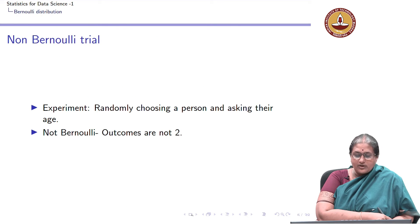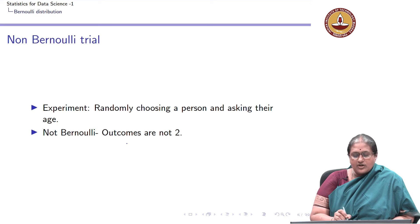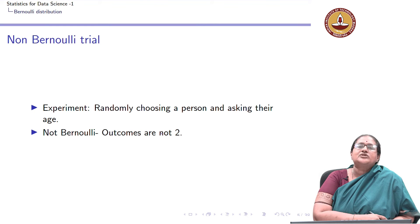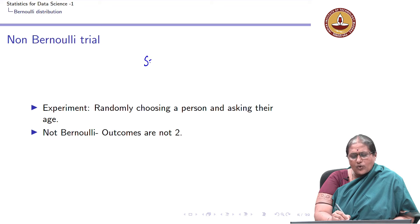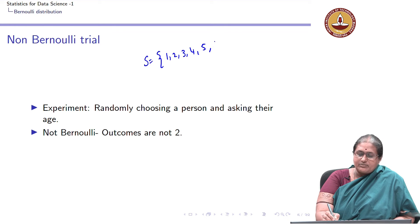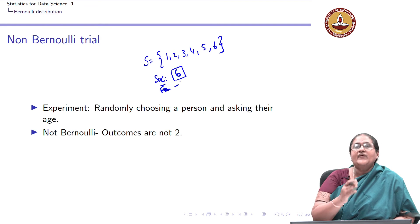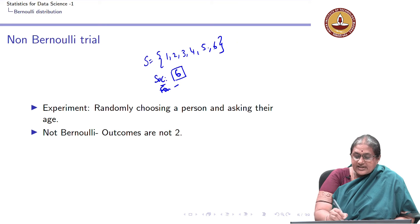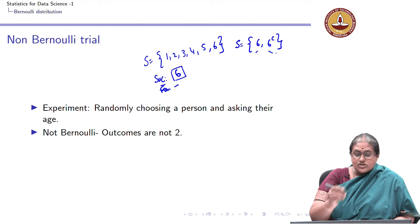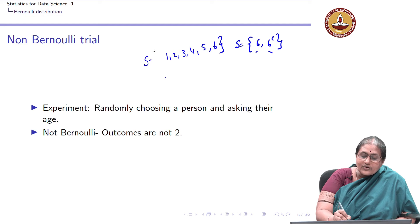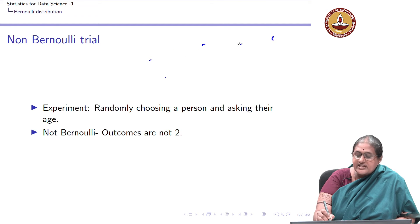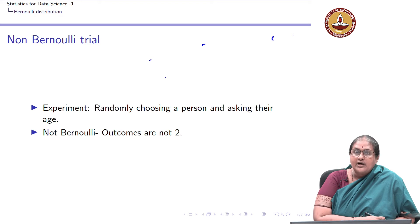Let us look at an example of a non-Bernoulli trial. If I randomly choose a person and ask their age, the outcomes are not just two — age can be anything. However, when I rolled a die I defined success as obtaining a six and failure as obtaining anything else, mapping the outcomes to just two. So I could write the sample space as {getting six, not getting six}. A Bernoulli trial depends on how you define the outcome — getting a six and not getting a six defines a Bernoulli trial.